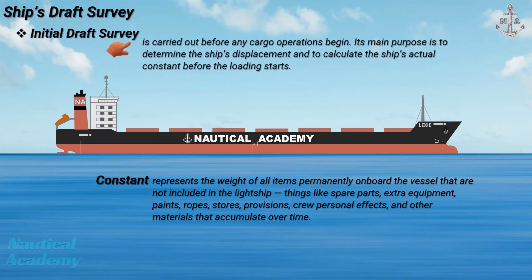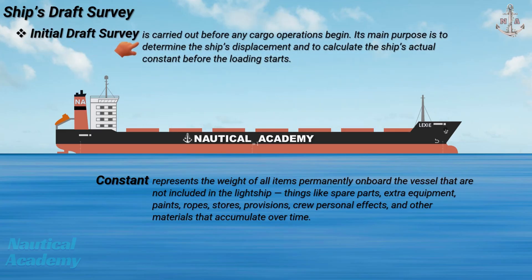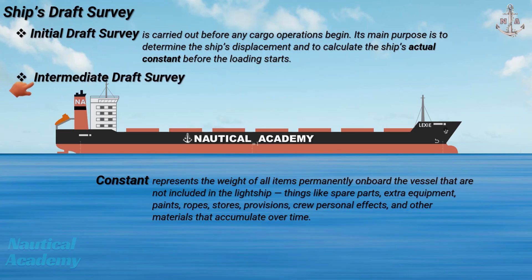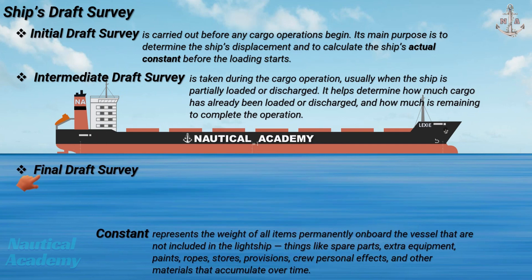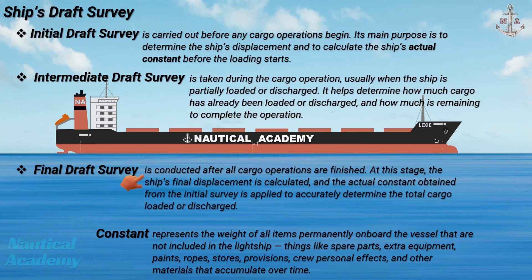Initial draft survey is carried out before any cargo operations begin. Its main purpose is to determine the ship's displacement and to calculate the ship's actual constant before loading starts. Intermediate draft survey is taken during cargo operations, usually when the ship is partially loaded or discharged, to determine how much cargo has been loaded or discharged and how much remains. Final draft survey is conducted after all cargo operations are finished, at which point the ship's final displacement is calculated and the actual constant from the initial survey is applied to accurately determine the total cargo loaded or discharged.